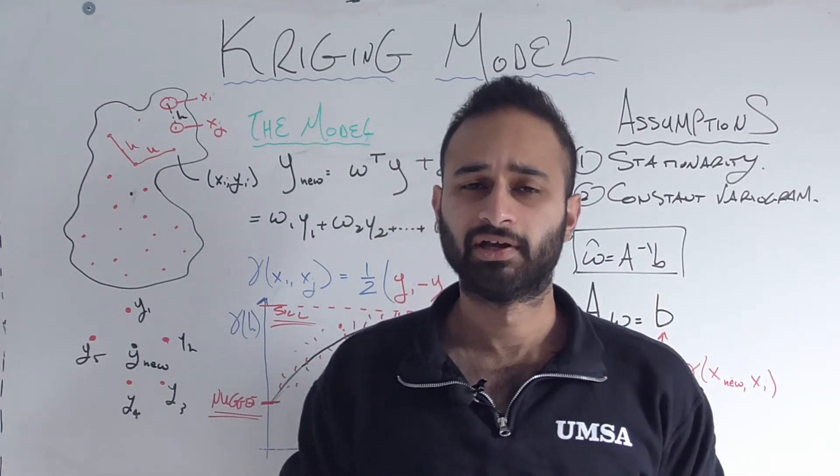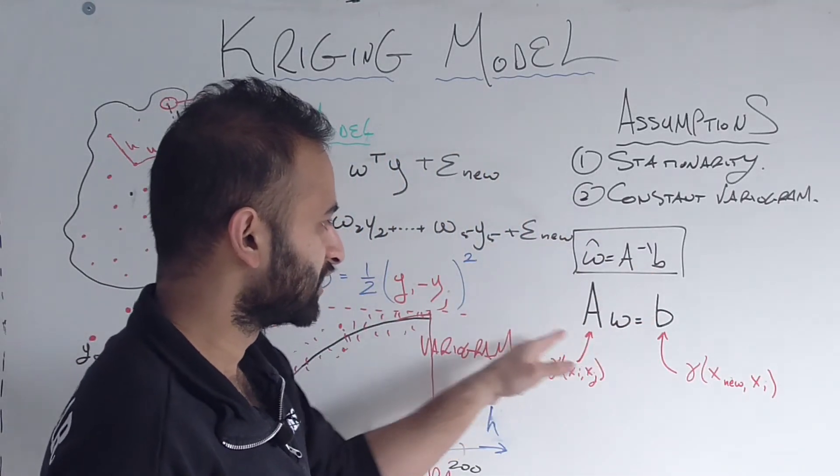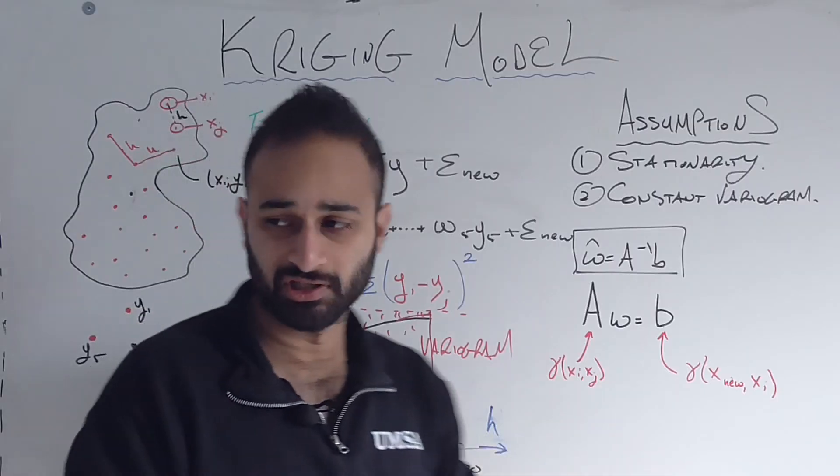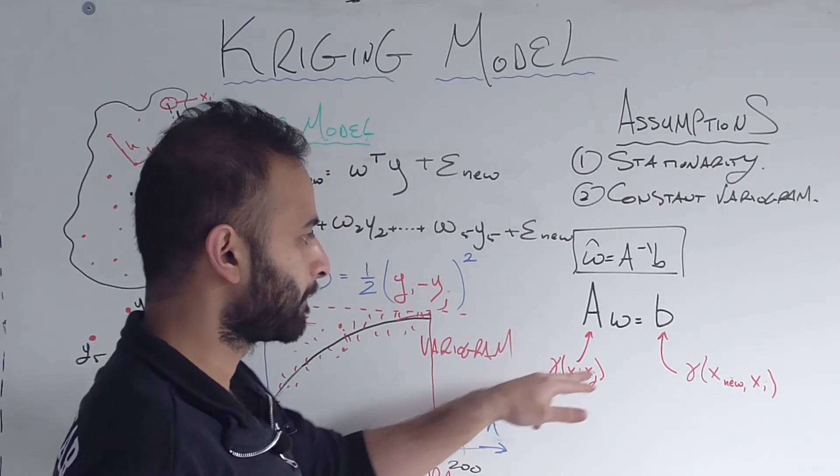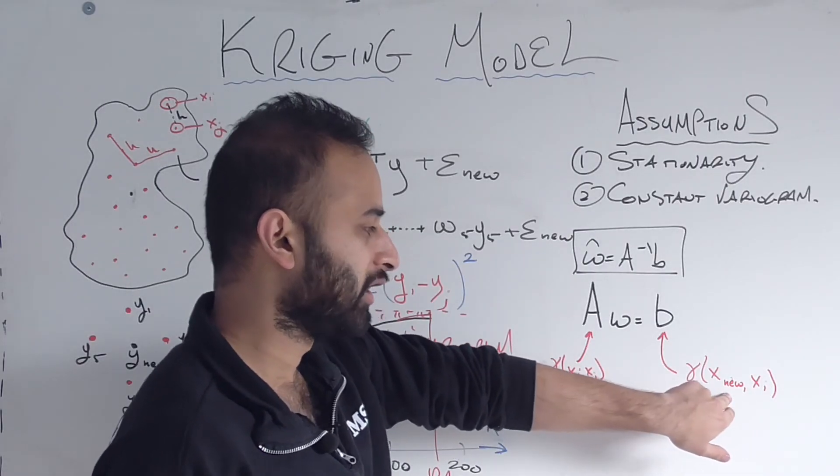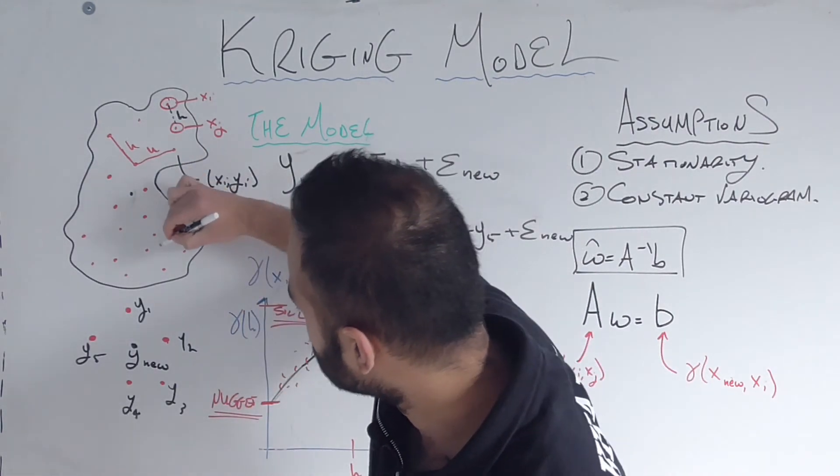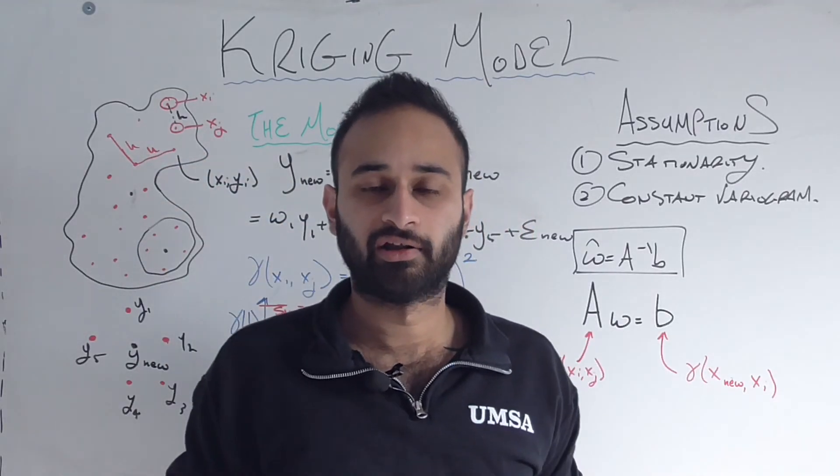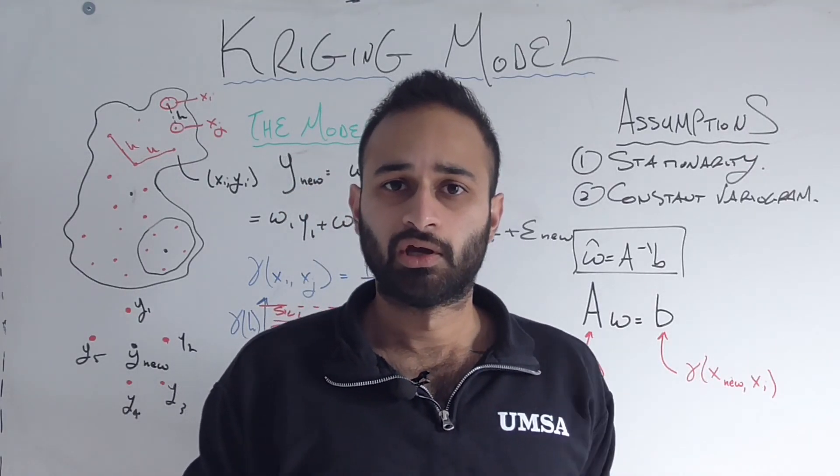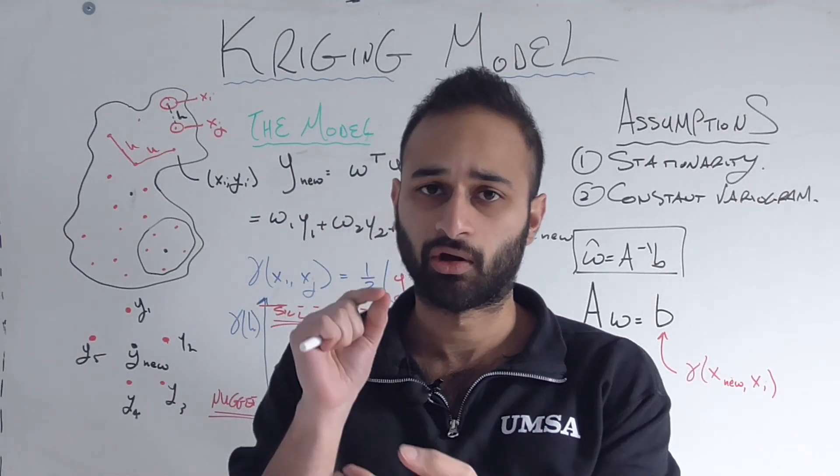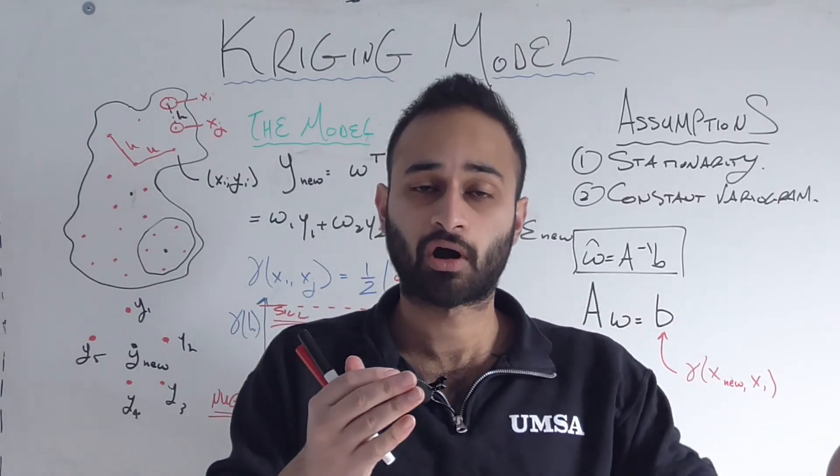One of the biggest cons of the Kriging model is the computational intensity, or how long it takes to get these weights. Because if you notice, these weights that we found using solving this linear equation are very specific to these five points. Because this A is constructed using the gamma function between pairs of these five points, and this B is constructed using gamma function of our new point with each of these five points. So if I decide that I want to predict my elevation somewhere else and use a different set of five points, then my entire linear equations have to change, which means I have to resolve this matrix inversion, which can be very costly. So basically, every set of weights is really only good for predicting one point. So if I'm predicting like hundreds of points, then I have to do hundreds of matrix inversions, which could be very expensive. So that's the pros and cons of the Kriging model.